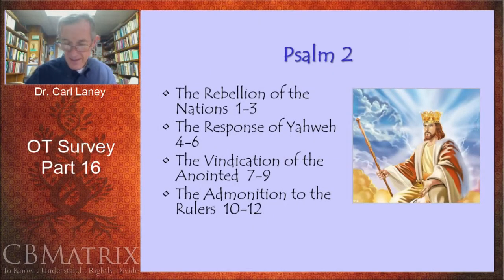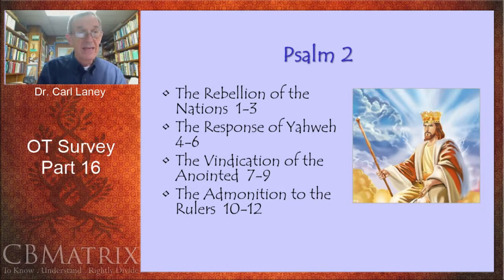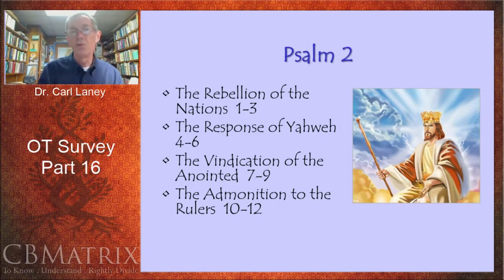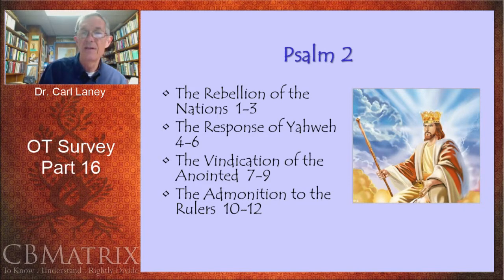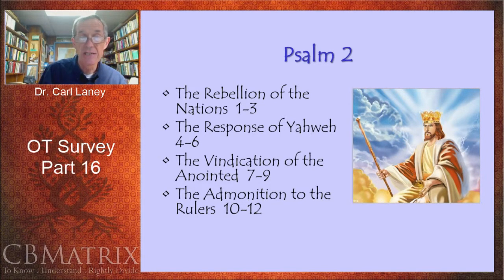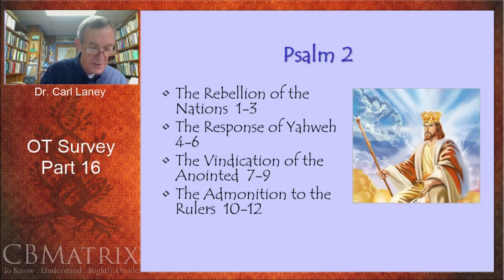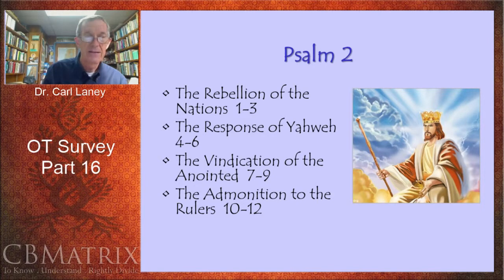One final messianic psalm is Psalm 2. In Psalm 2, we see the nations in rebellion against God, but ultimately they will be subject to the rule and reign of the Messiah. 'Why are the nations in an uproar and the people devising a vain thing? The kings of the earth take their stand, and the rulers take counsel together against the Lord and against his Mashiach — his Messiah.' Here we have a reference to God the Father and his Son Jesus the Messiah. The nations are shaking their fist in the face of the Messiah, saying 'let us tear their fetters apart and cast away their cords from us.' They're rejecting God, turning away from their Creator.